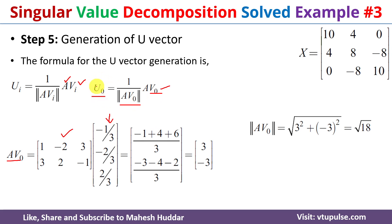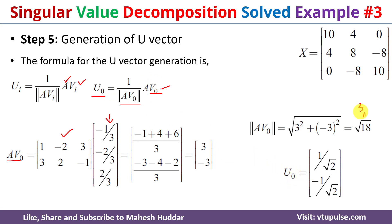Then u0 equals [3, -3] divided by 3√2. The 3's cancel, giving u0 = [1/√2, -1/√2].